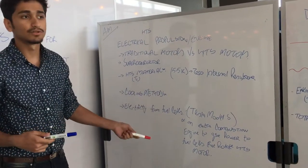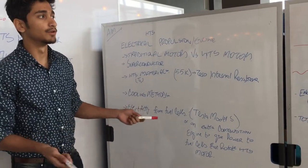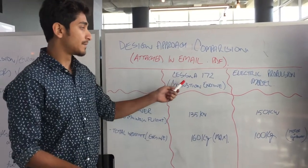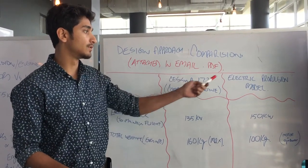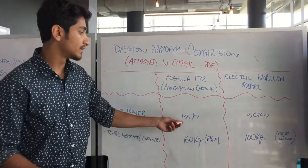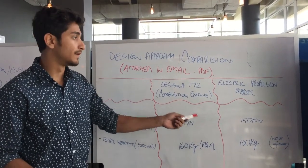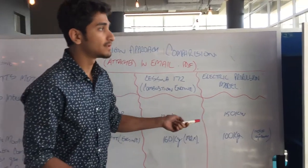Fuel cells are also used to provide electricity to the motors. This is a comparison chart that compares a Cessna combustion engine to electric propulsion models. You can see there is less weight and more power with these comparisons.